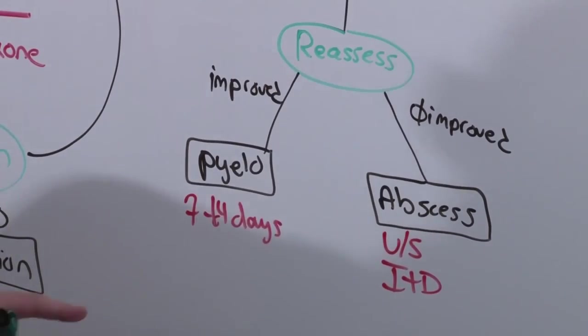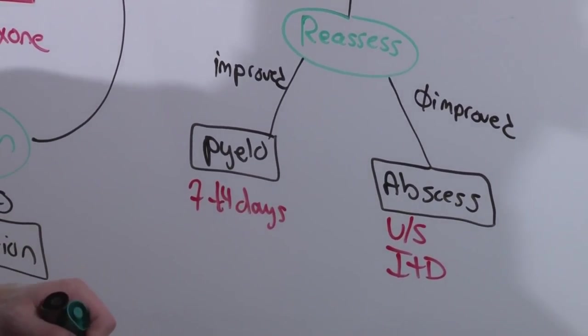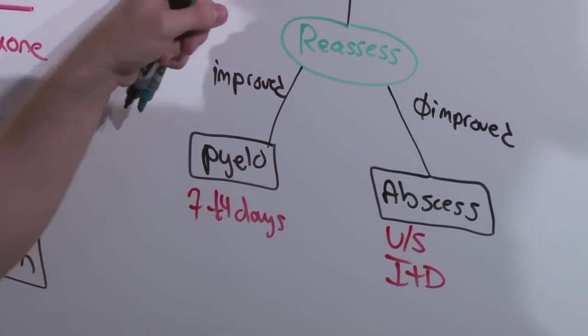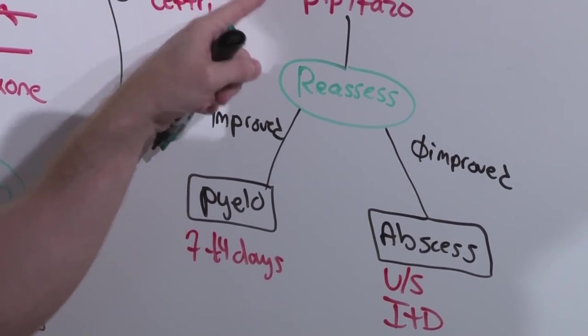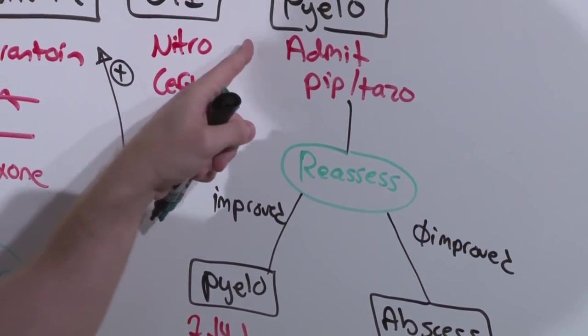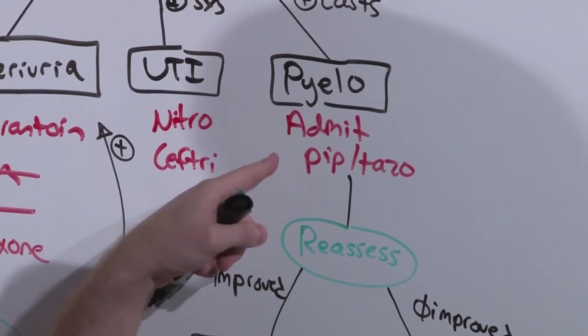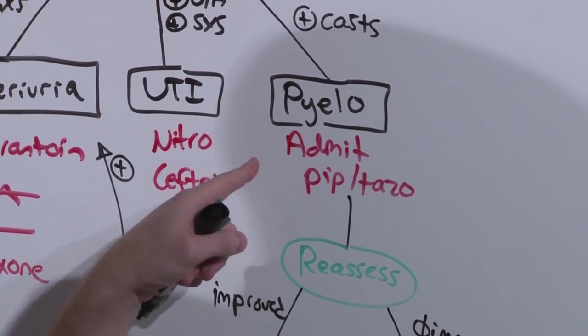So remember, no CT scans, no teratogenic antibiotics. The antibiotics you're going to choose are nitrofurantoin, ceftriaxone, or if she's got suspected pyelo, piptazo. And remember that pyelonephritis is systemic disease and you should get blood cultures to make sure the bacteria doesn't have access to baby.